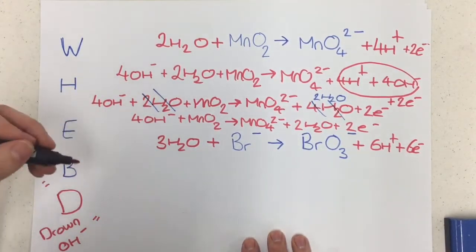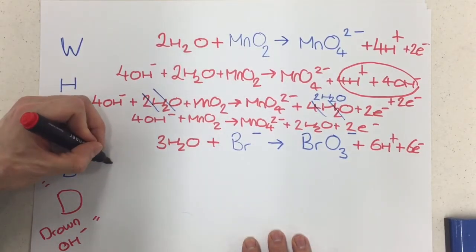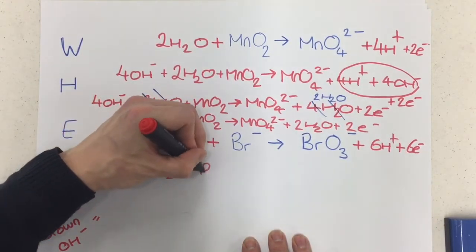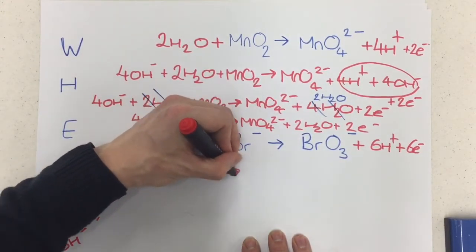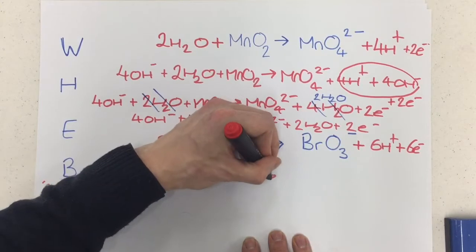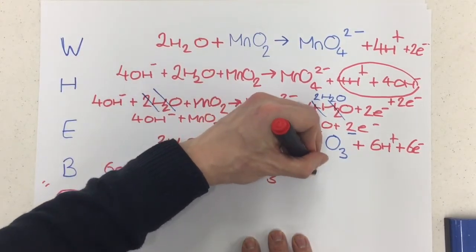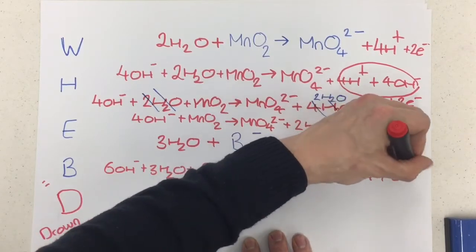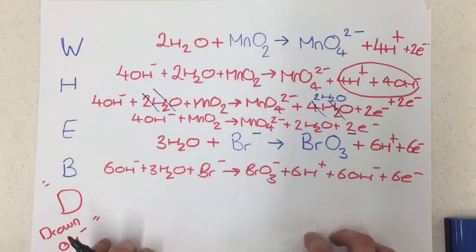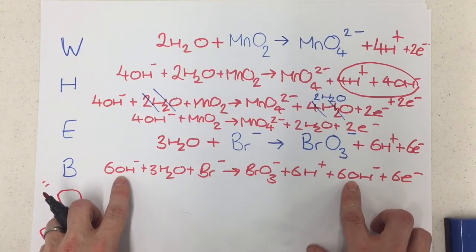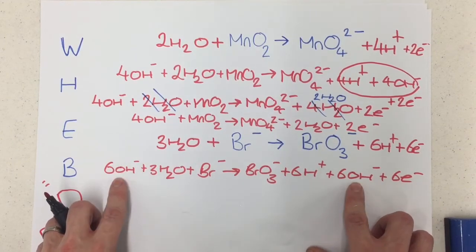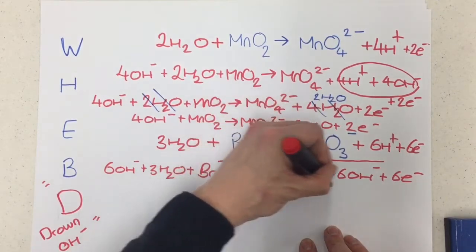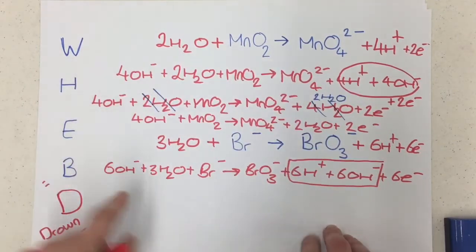So, I'm going to rewrite this, and I'll do it in full so you can see it nice and stepwise. We've got 6OH- plus 3H2O reacting with the Br-, which gives you BrO3- plus 6H+, 6OH-, and 6 electrons. So you can see here what I've done, because I had 6H+, I introduced 6OH- to both sides.